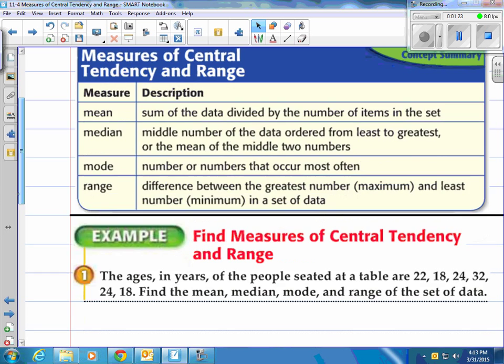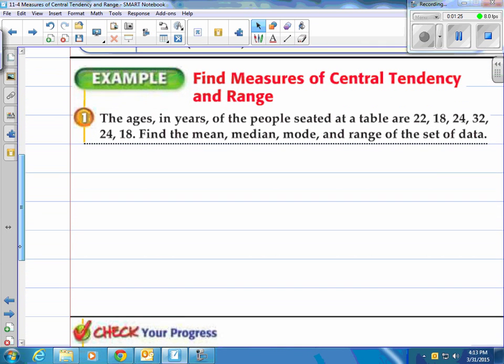Best way of course to learn these terms is to see the action. So it says find the measures of central tendency and range for this example. The ages in years of the people seated at a table are 22, 18, 24, 32, 24, and 18. Find the mean, median, mode, and range of the set of data.